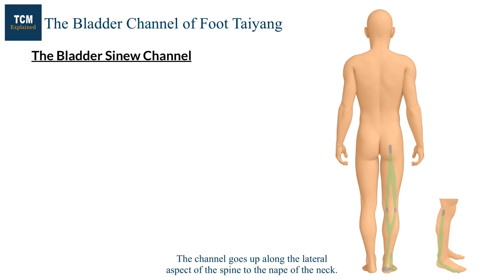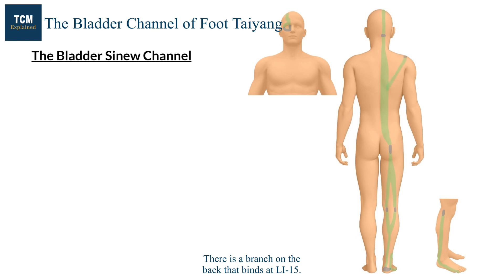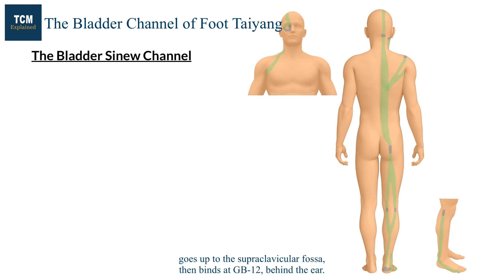The channel goes up along the lateral aspect of the spine to the nape of the neck. A branch binds at the root of the tongue, and the channel binds at the occipital bone. It goes up over the head, binds at the bridge of the nose, curves around the eye, then binds at the cheekbone. There is a branch on the back that binds at large intestine 15. A second branch goes inferior to the axilla, up to the supraclavicular fossa, then binds at gallbladder 12, behind the ear. A third branch from the supraclavicular fossa binds at the cheekbone.